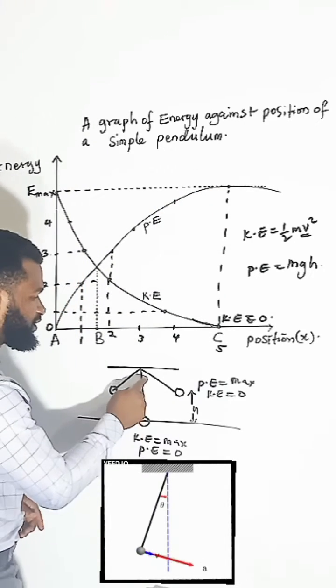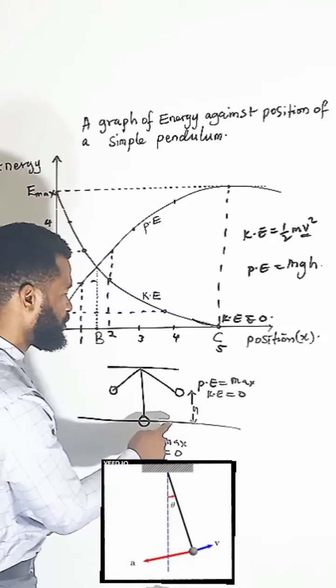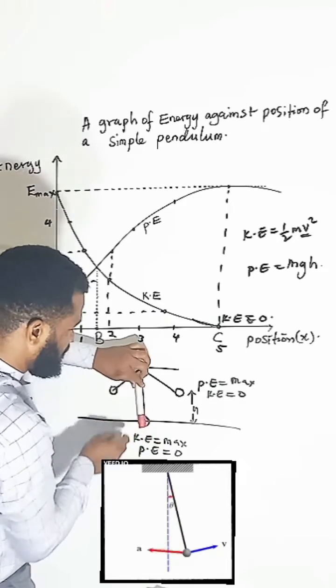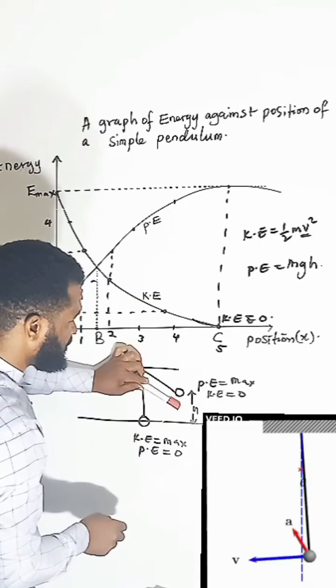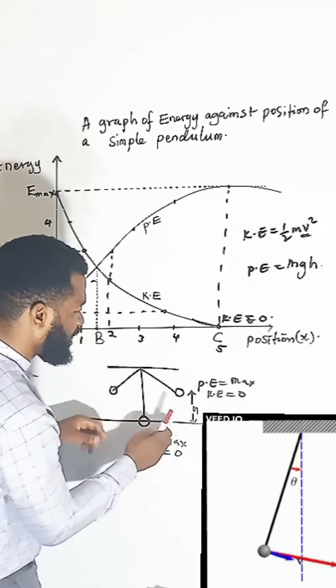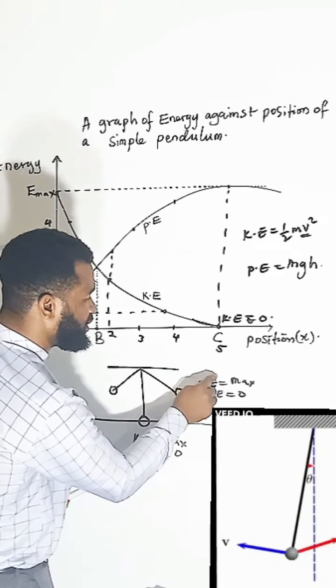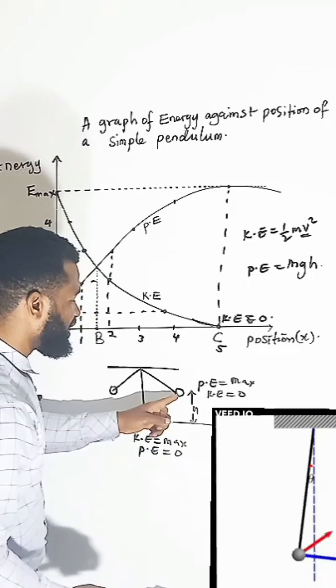Now, if it is this one, which is the real-life situation, you realize that when this particular pendulum has increased and opened a height above this level, then we say that potential energy is maximum. But then, at this point...